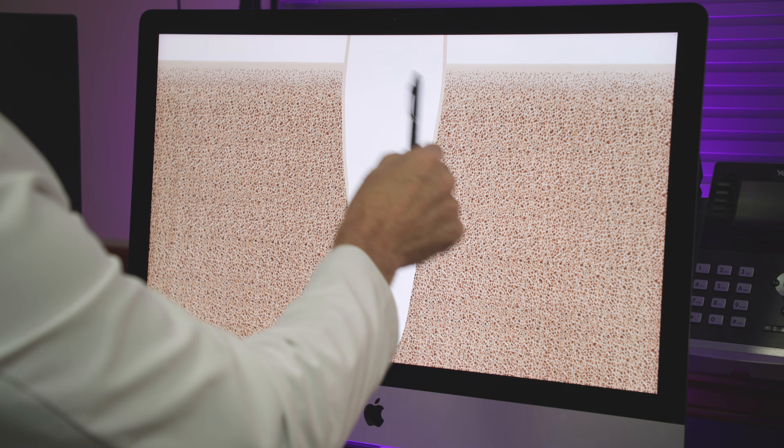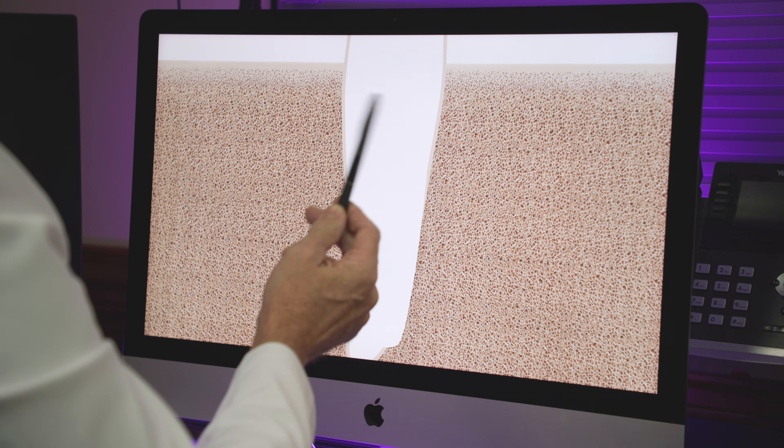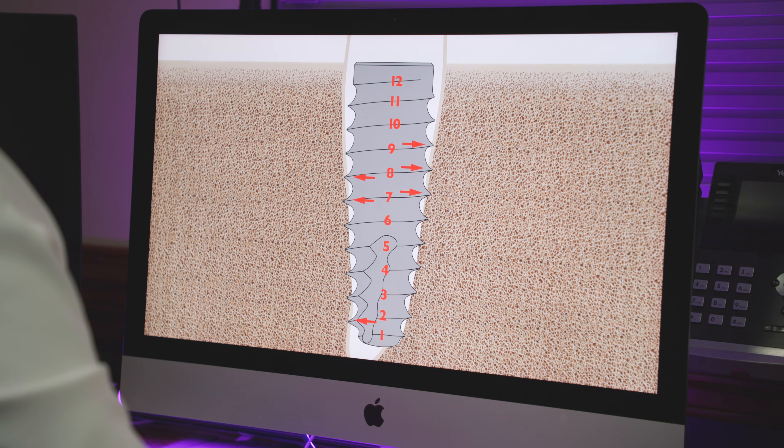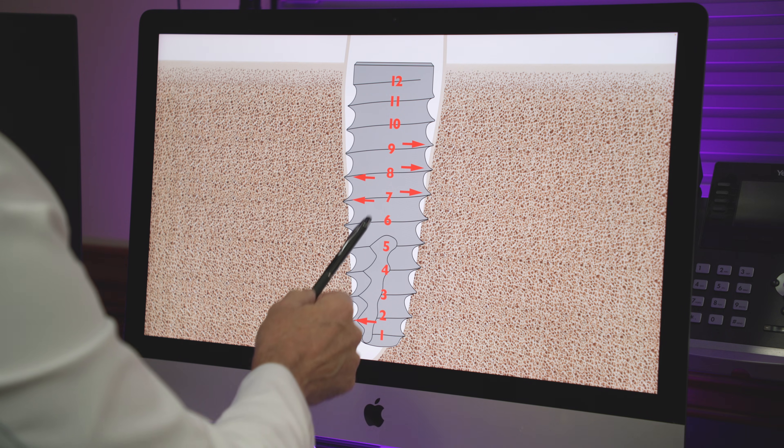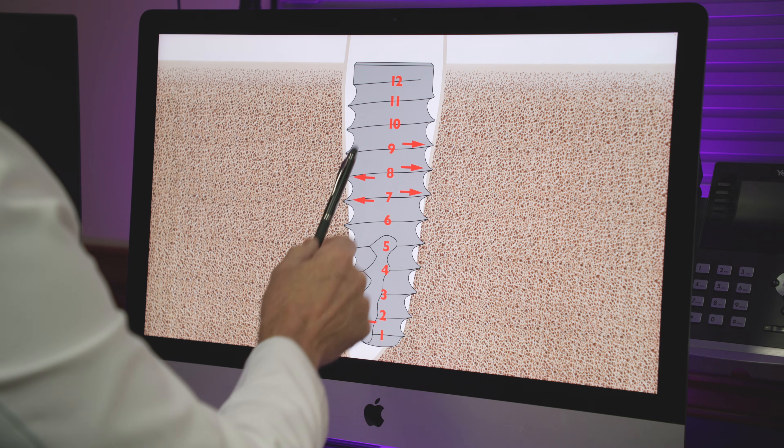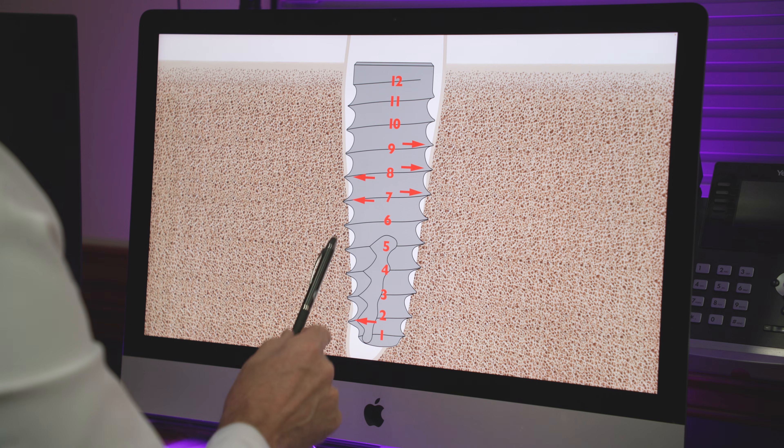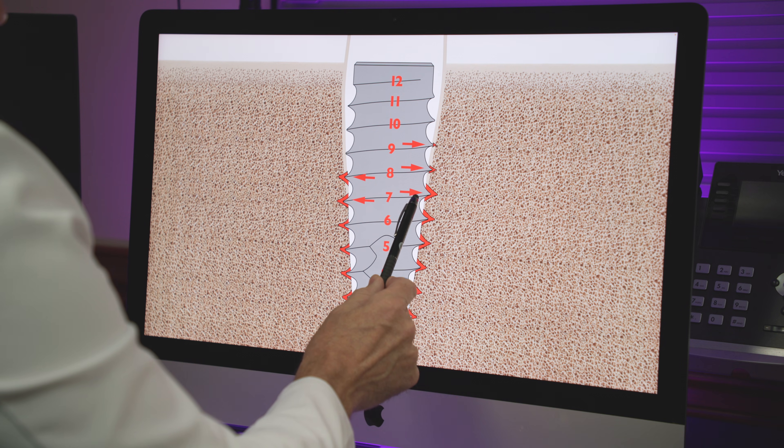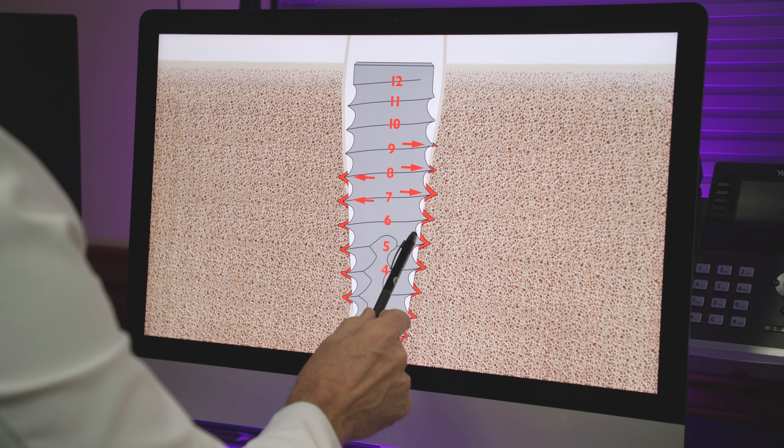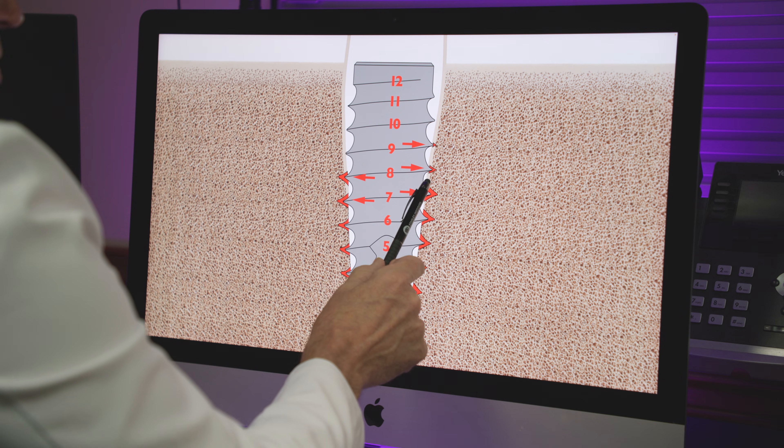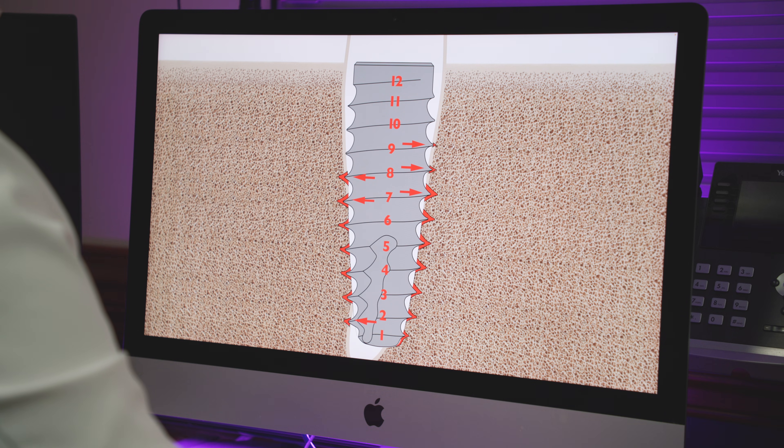So these regions are still hard and these regions are trabecular. So now when we come in and we insert our implants, what I want to bring to your attention are threads two, seven, eight, and nine. Those threads are engaging cortical bone. These threads are engaging trabecular bone, soft bone. So watch what happens. All of the bone is displaced the same amount. So thread seven displaces the bone the same amount as thread six. The difference is, is that thread seven is engaging cortical bone and thread six is engaging trabecular bone.